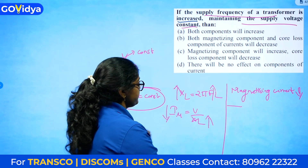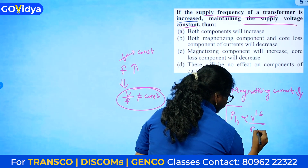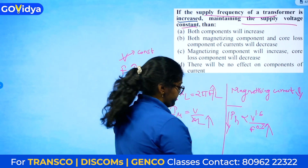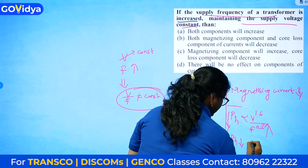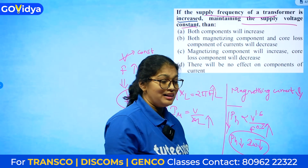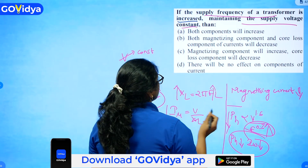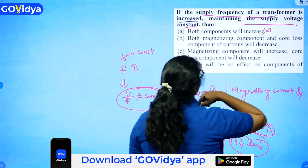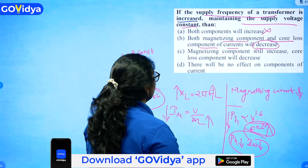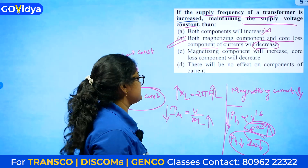For the core loss component, hysteresis loss is directly proportional to V^(1/1.6) divided by frequency^0.6. If frequency increases, hysteresis loss decreases, so the core loss component of current also decreases. Both the magnetizing component and the core loss component of current will decrease as frequency increases. Option B matches.